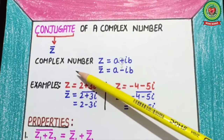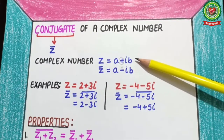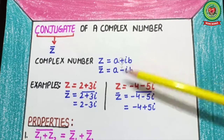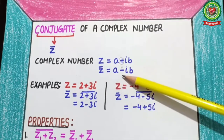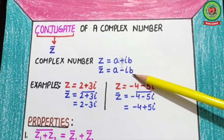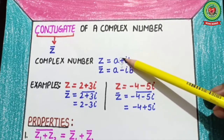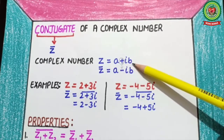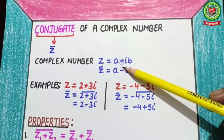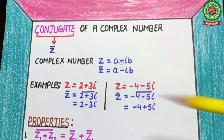First of all, a complex number z equals a plus iota b. This is the general form of a complex number, and the conjugate of this complex number equals a minus iota b. In the case of a conjugate, the sign between the real and imaginary parts is changed. If there is a plus sign, it becomes minus, and if there is a minus sign, it becomes plus.